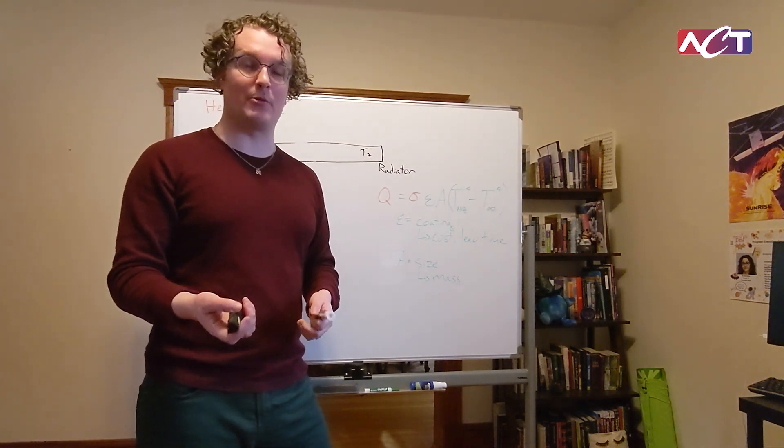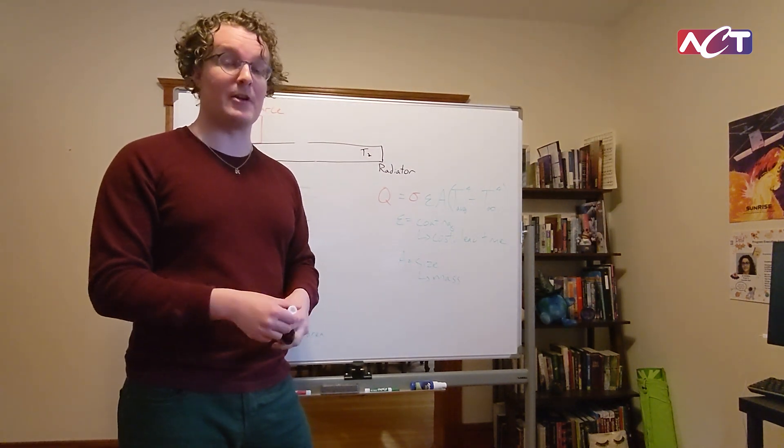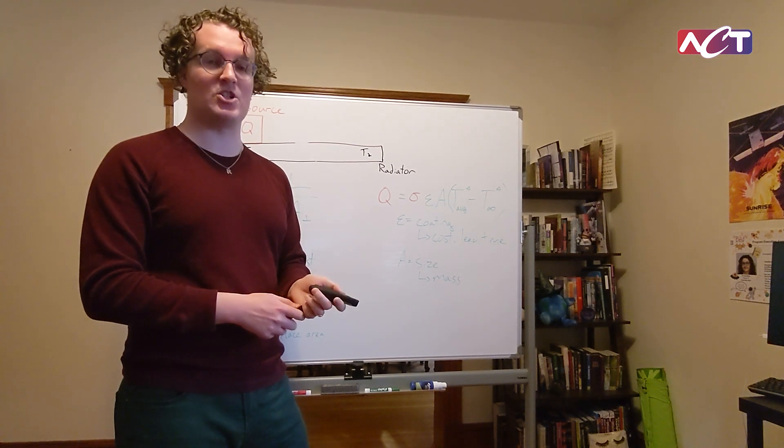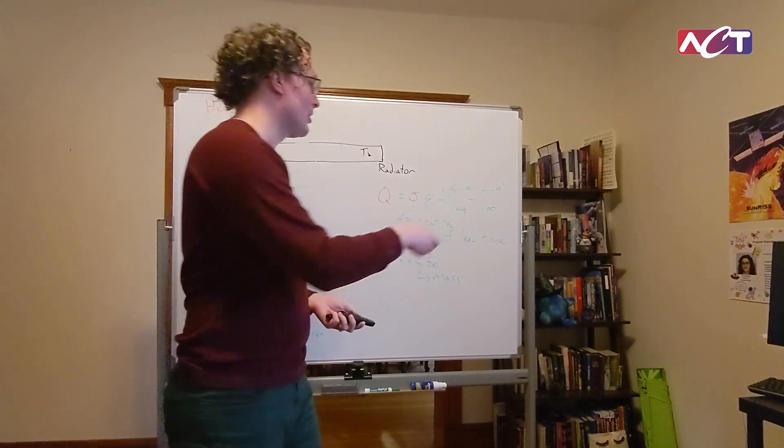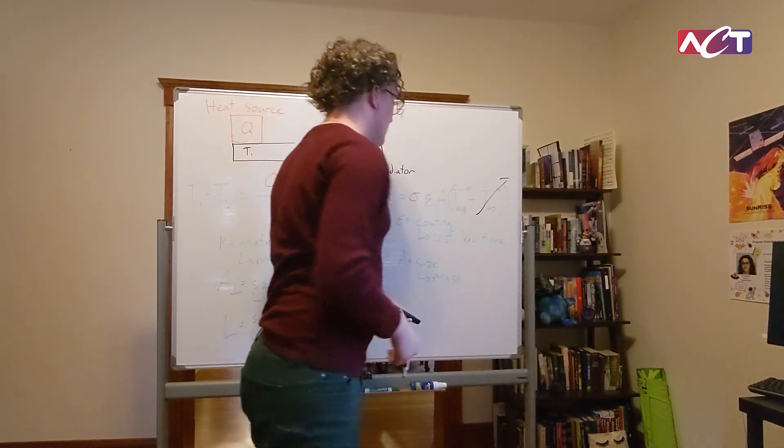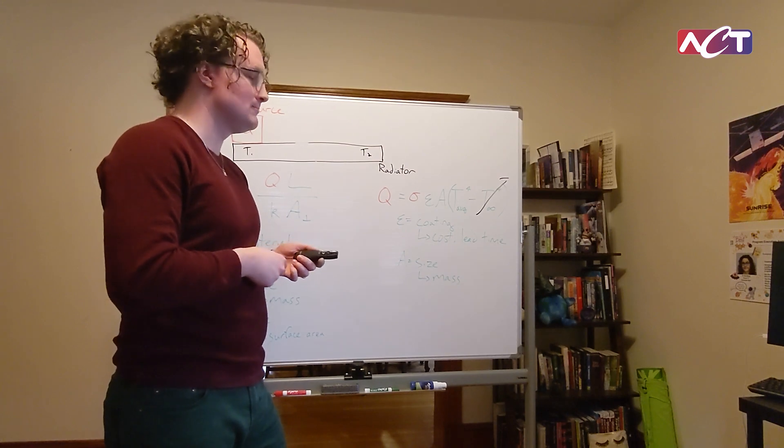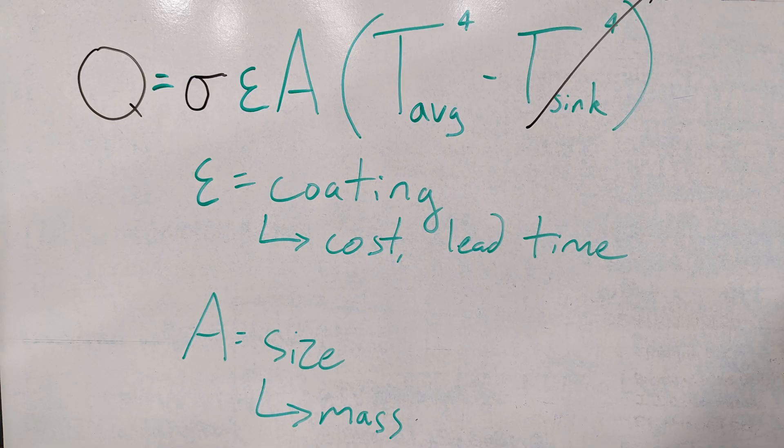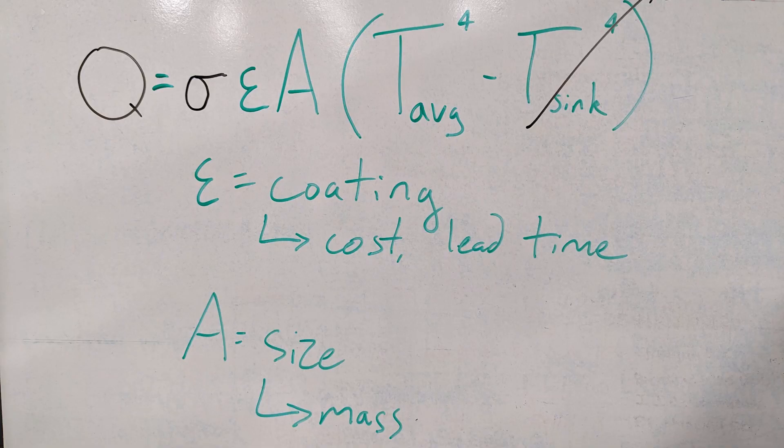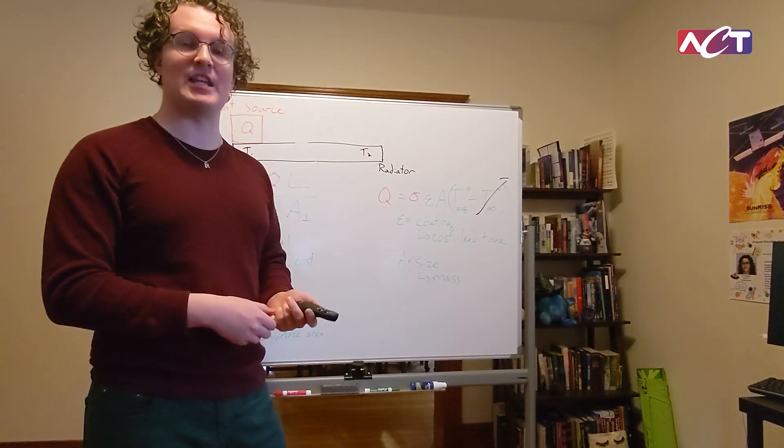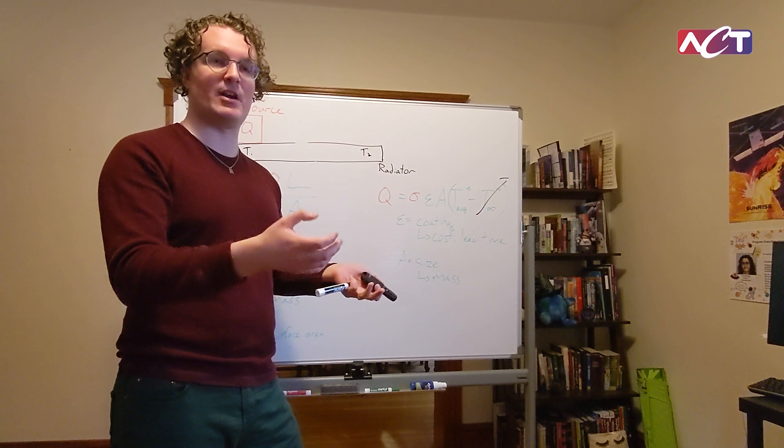For space, mostly you are radiating to deep space. Deep space is very cold, about three Kelvin, and three Kelvin to the fourth power is much smaller than any reasonable Kelvin temperature to the fourth power, so for the most part we neglect this. That leaves us with a relatively simple linear equation with just three independent variables for figuring out how much heat you can get out of a spacecraft radiator.